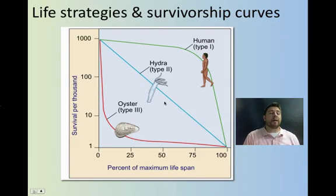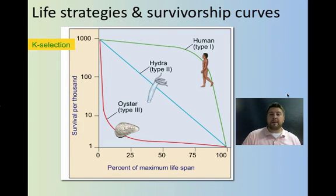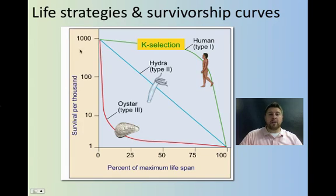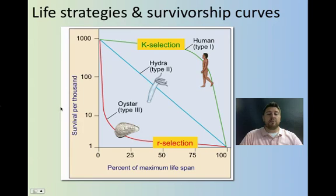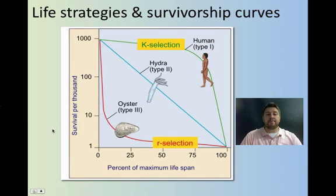You can see where that comes back into survivorship curves. A Type 1 survivorship curve is kind of K-selection — low infant mortality because the parents take care of them. Whereas R-selected is more like Type 3: parents don't take care of them, so there's a lot of death early on, but once they make it past a certain age, they're probably okay.